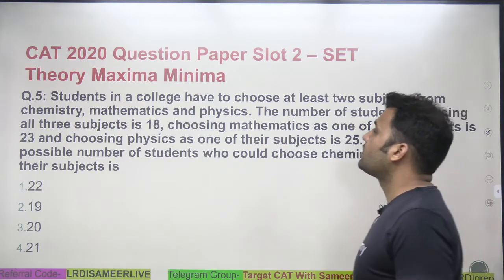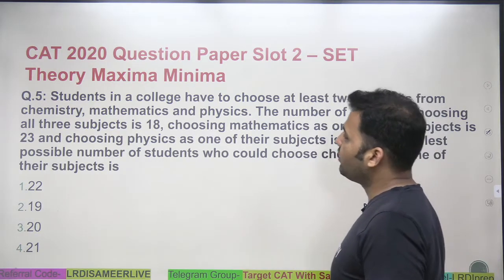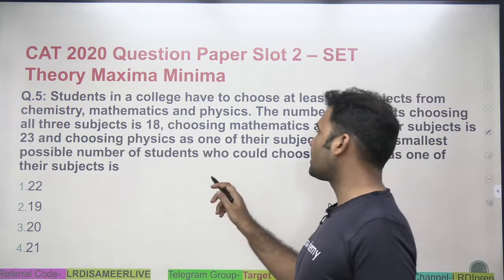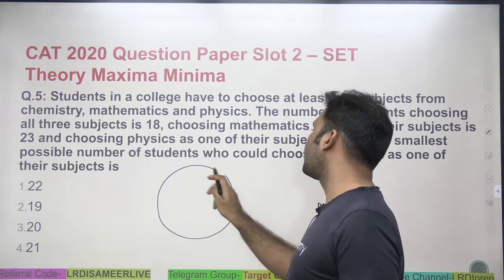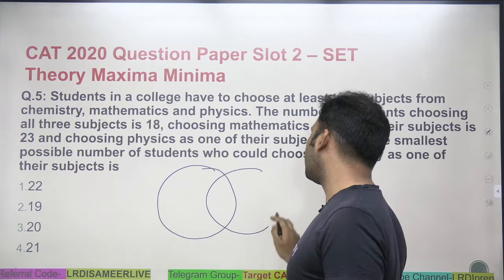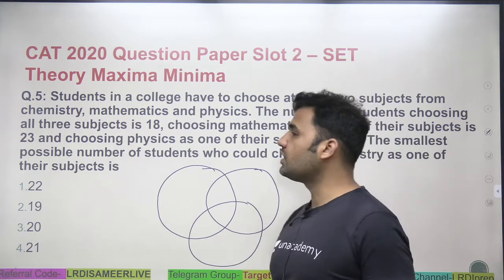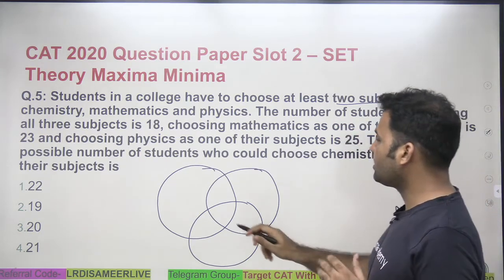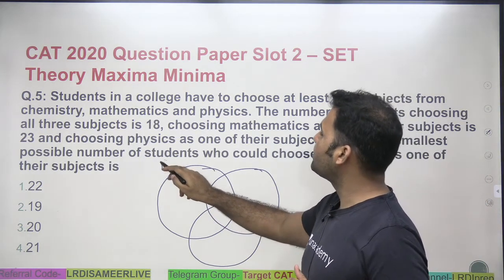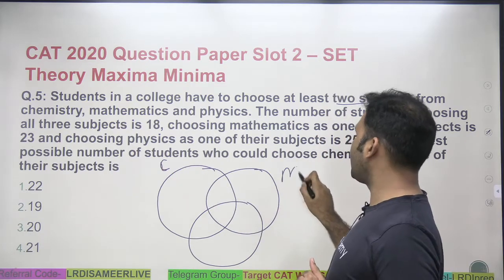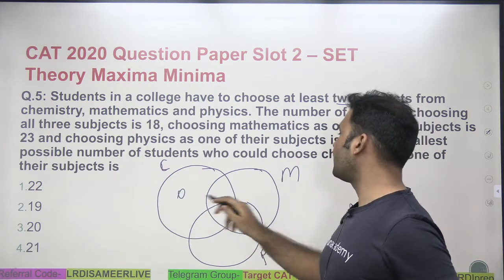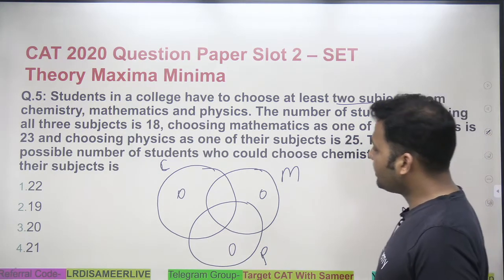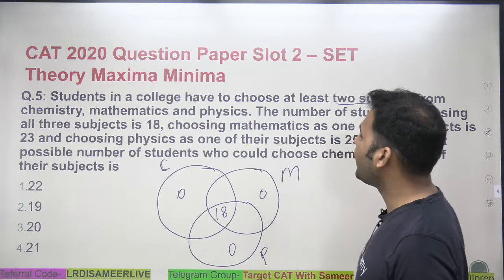Question 5: students in a college have to choose at least two subjects from chemistry, mathematics, and physics. The moment you see this question, you should recognize it as a maxima and minima problem. Draw a Venn diagram of three subjects. Since every student selects at least two subjects, students selecting only chemistry, only mathematics, or only physics is definitely zero. The minimum number of students choosing all three subjects is 18.